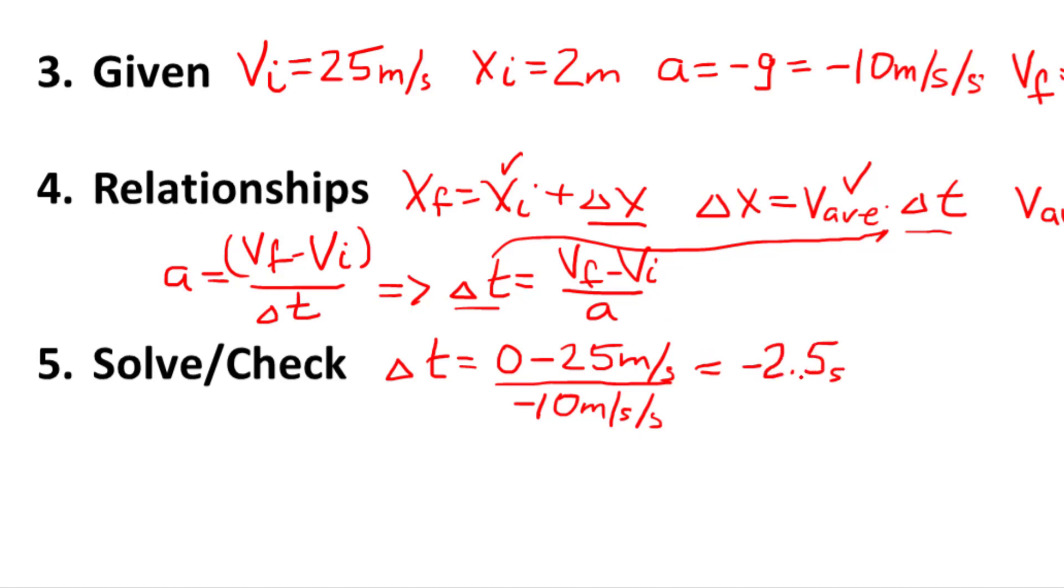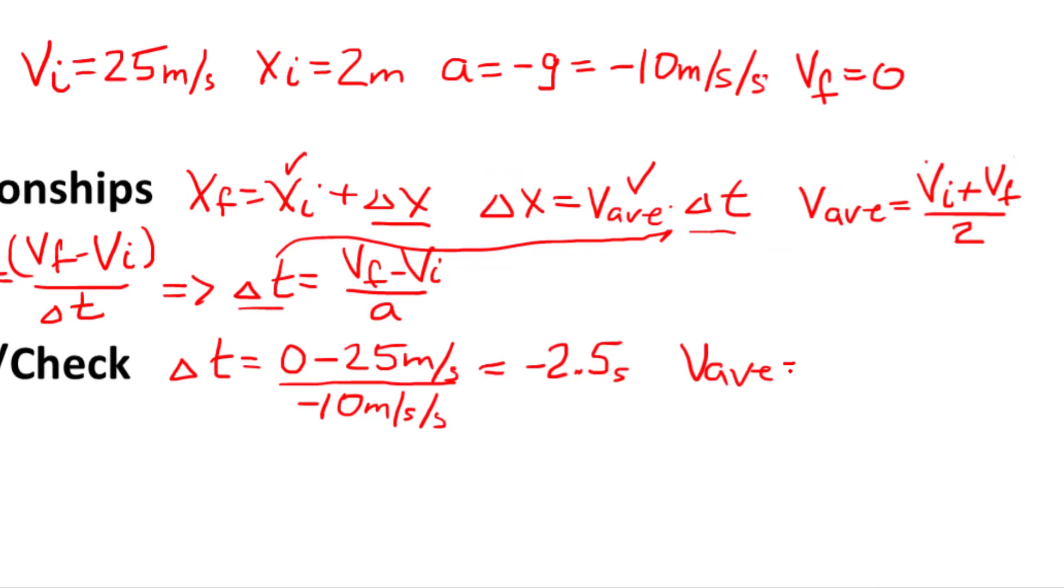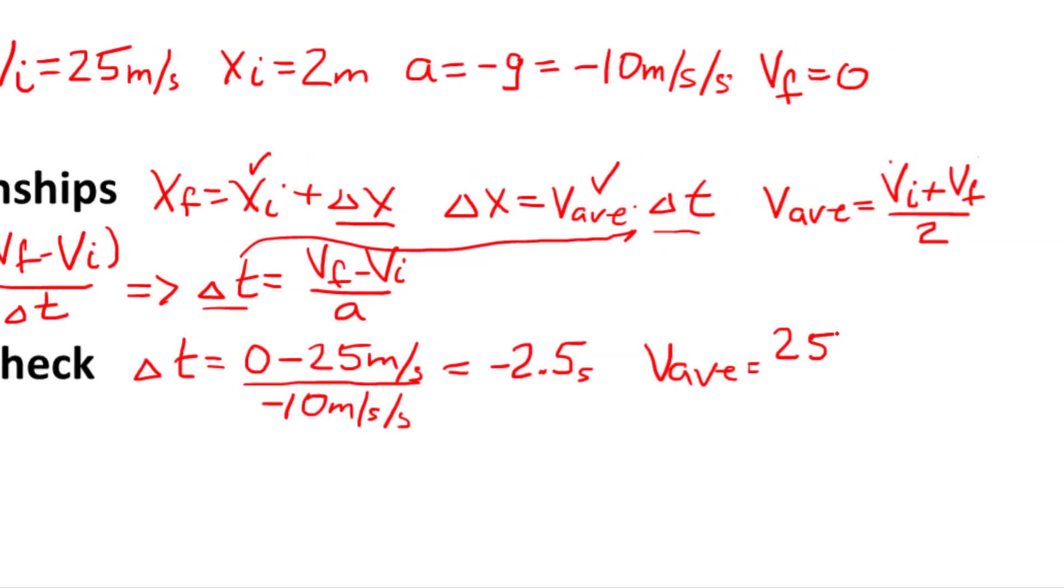It makes sense. If I throw something up, it loses 10 meters per second on every second that goes by. Go ahead and we'll figure out our average velocity. Our average velocity is equal to our initial velocity, 25 meters per second, our final velocity at the time is 0. We'll divide that by 2. We'll find that our average velocity is a positive 12.5 meters per second.